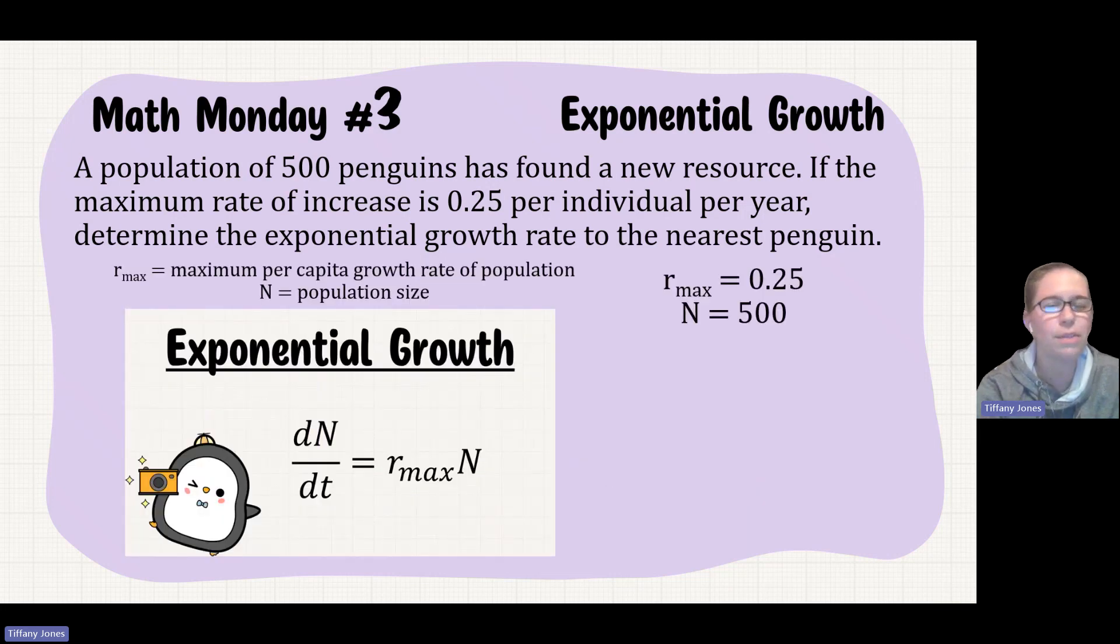We're going to substitute this in. I always find that whenever you do problems with variables, it's good to figure out what those variables are. So r_max is 0.25, because that's what's given to us, and the population starts out being 500, so N equals 500.